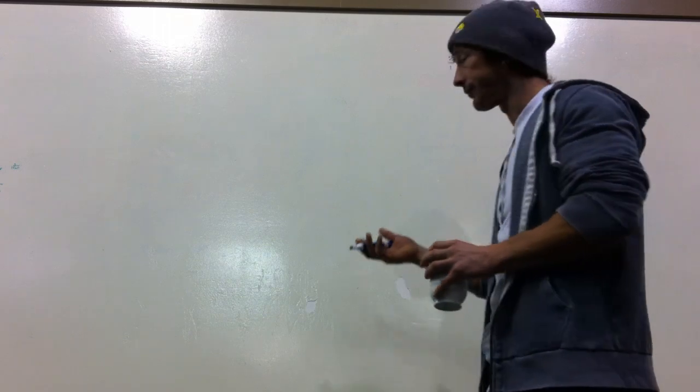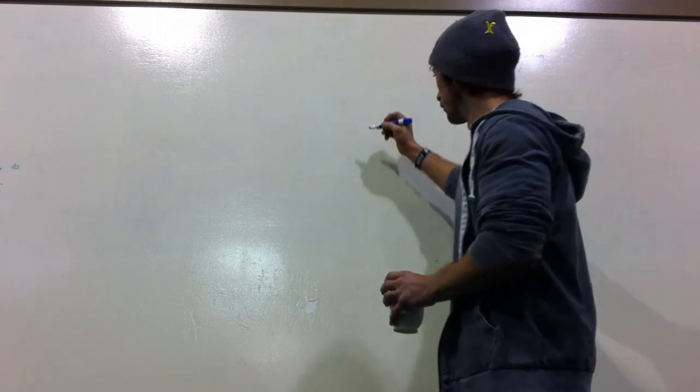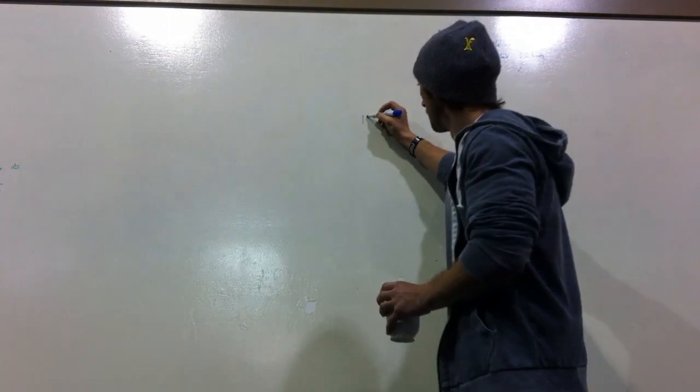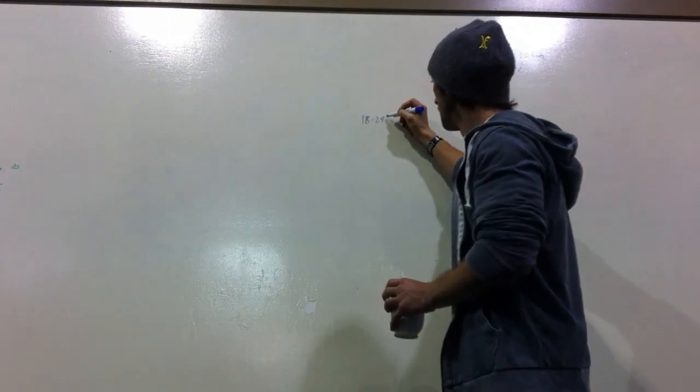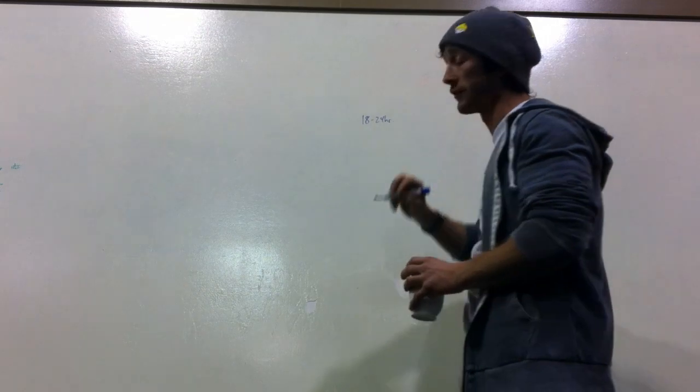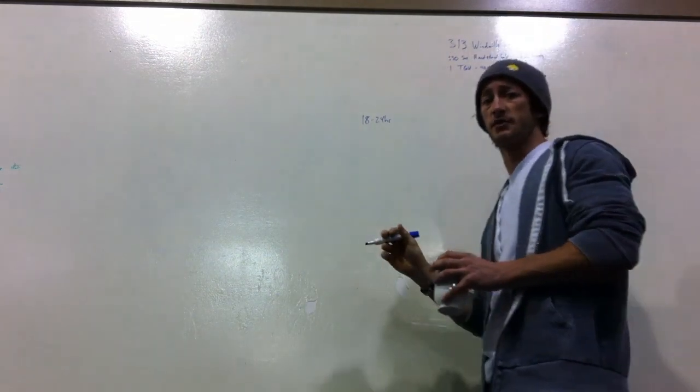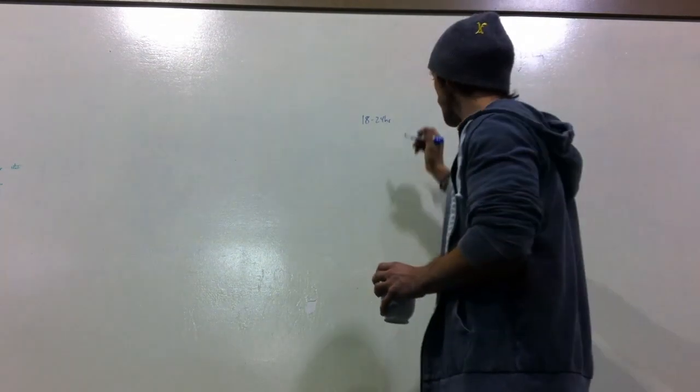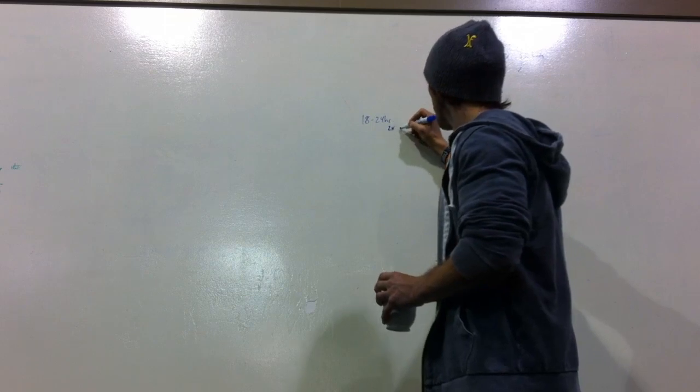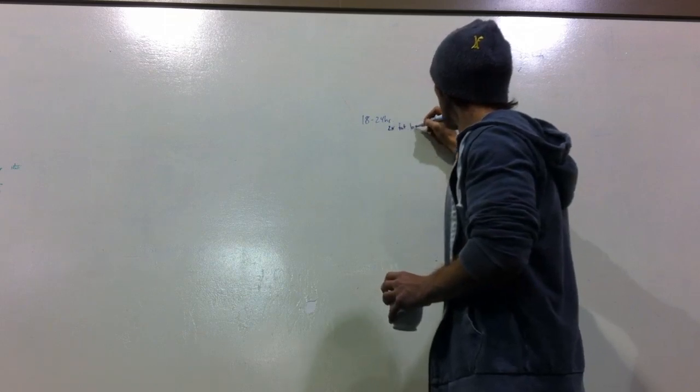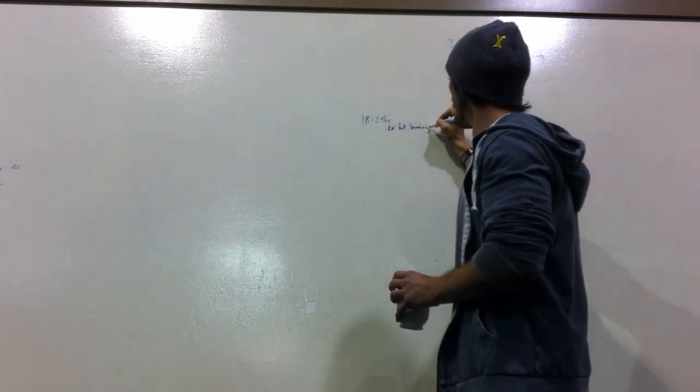So in a fasted state, a non-exercising individual between the 18 and 24 hours of their fast is going to burn two times as much subcutaneous fat. So the stuff on the surface is a double increase of fat burn. That's a pretty phenomenal number.